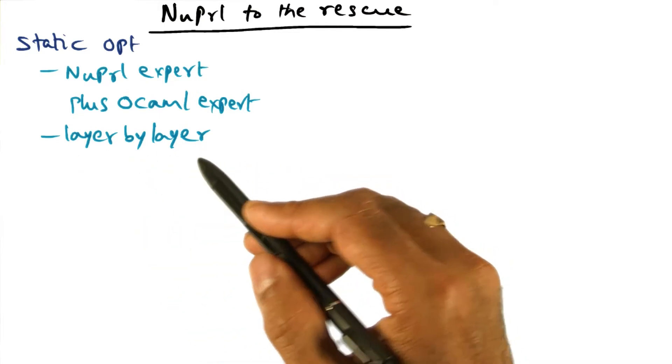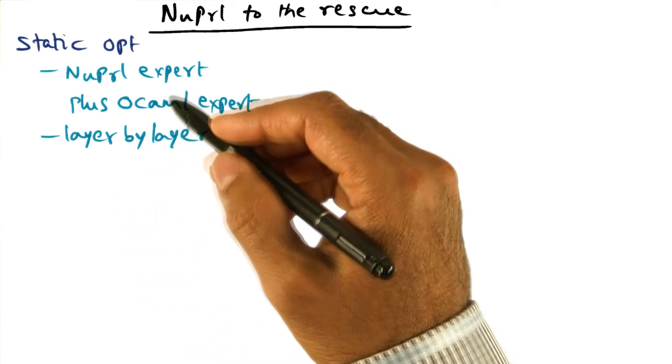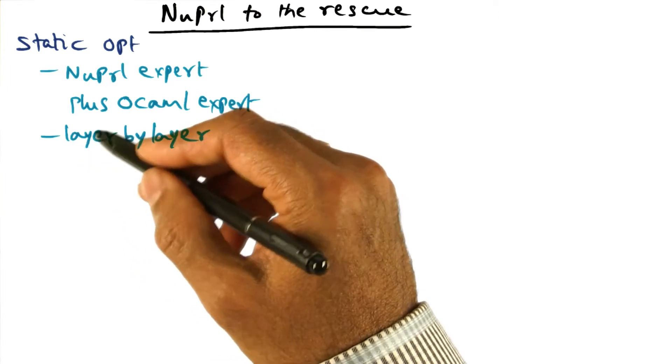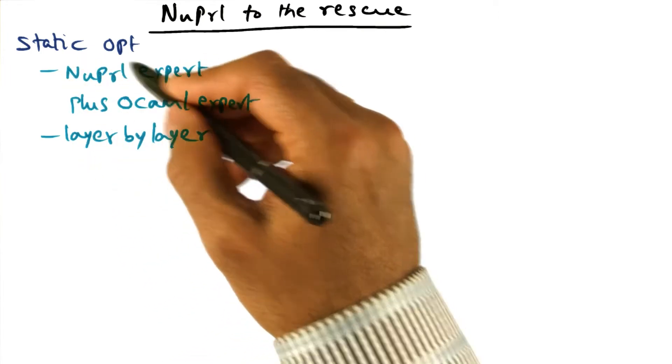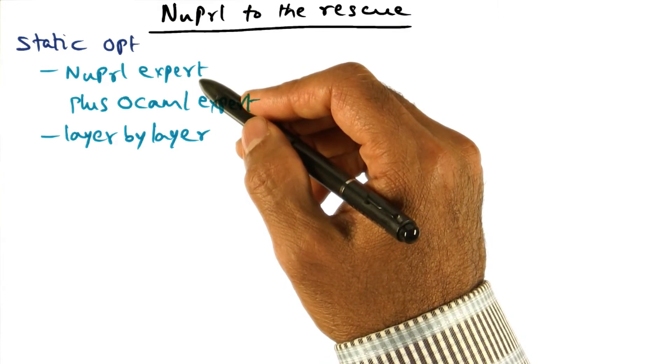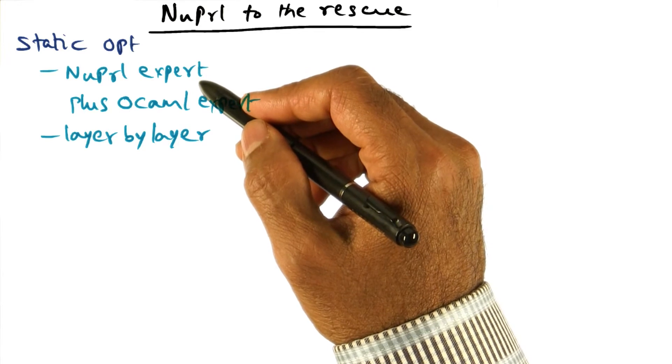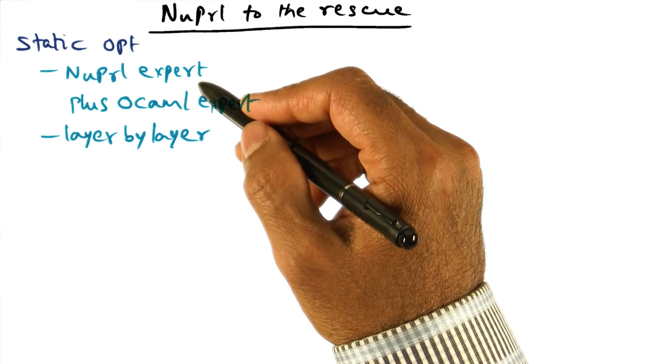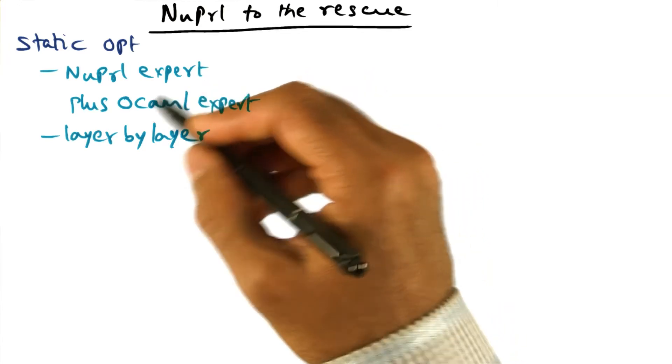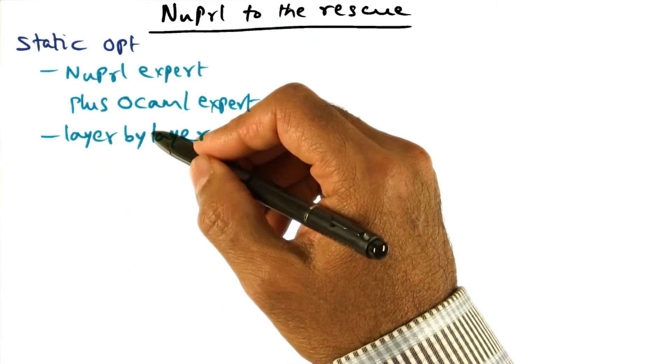We're not going across layers, but for every layer we're asking the question, is it possible to simplify the functionality of what is happening in one layer by looking at the NewPearl code and using the NewPearl framework and the optimization theorems that is part of that framework to come up with a more optimized implementation of each and every one of these layers. That's what we're doing in this first step.